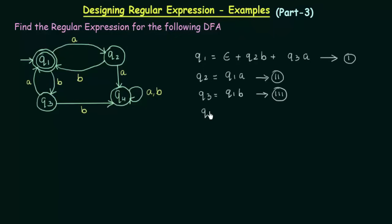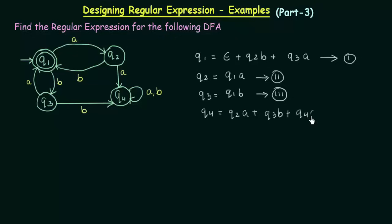Now let's do the same thing for Q4. In Q4 we see that there are incoming transitions from Q2, Q3 and also from Q4. Q2 comes with input A plus Q3 comes with input B. And for Q4 it is coming with input A and B, so we write Q4A plus Q4B. This is equation number 4.